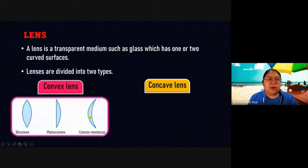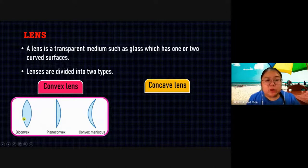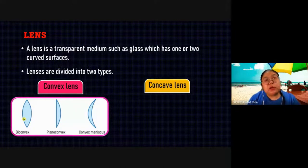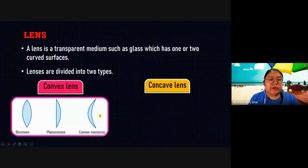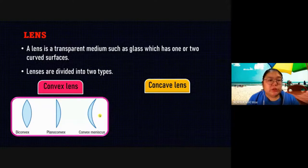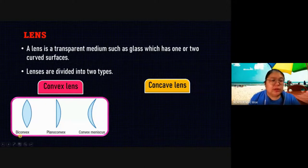We show the diagram. The convex lens — you can see both sides are curved. The body shape is fat at the middle. This one has one curved side. This one has both sides curved but they look like a moon shape.